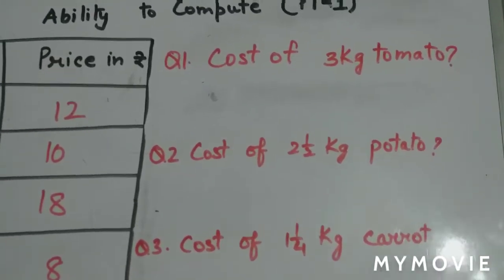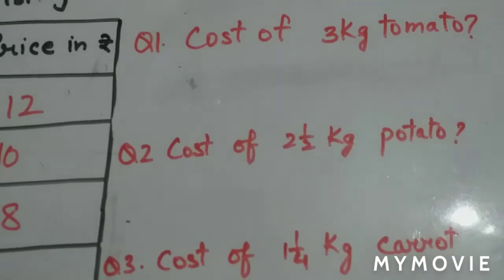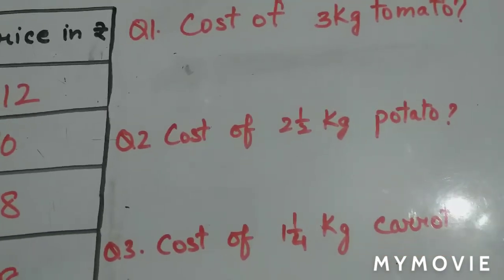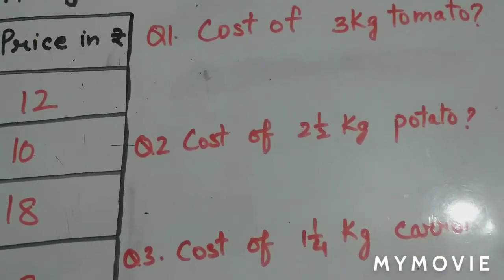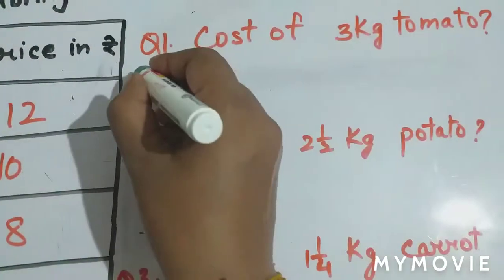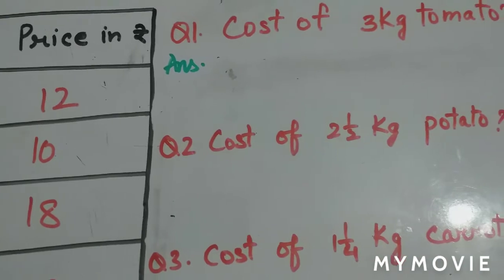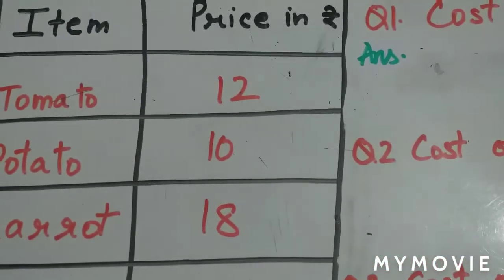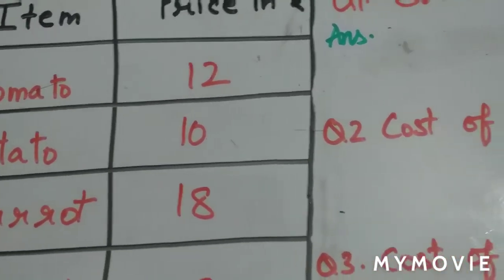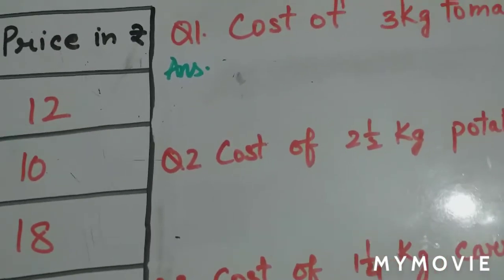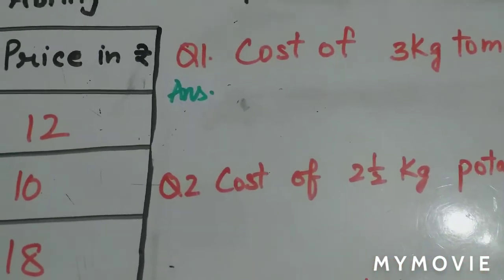Let's see what is the cost of 3 kg tomato and how we will be calculating this. First we have to see what is the cost of 1 kg. The cost of 1 kg tomato from the table is 12 rupees.